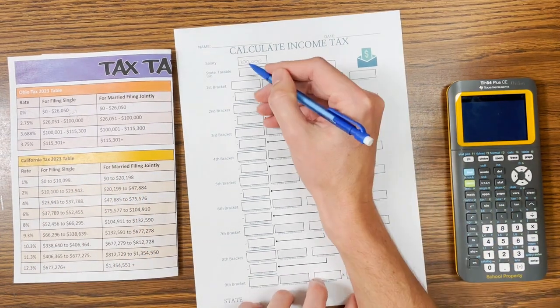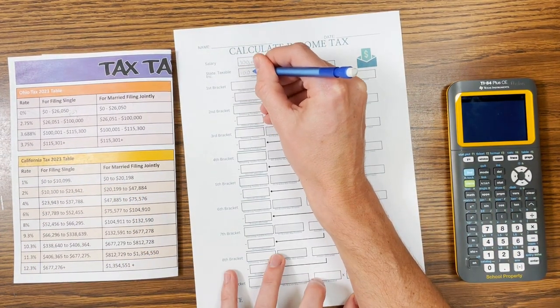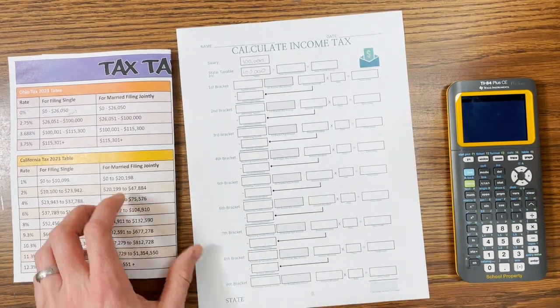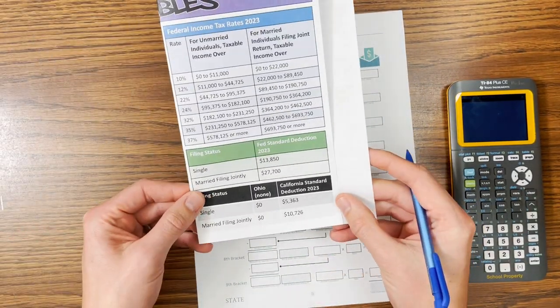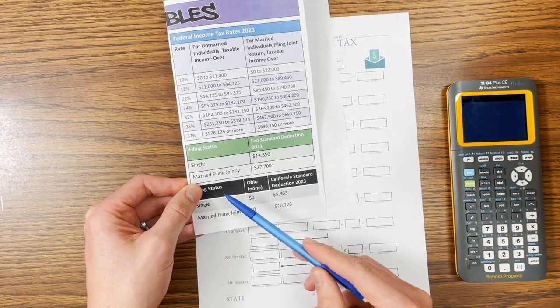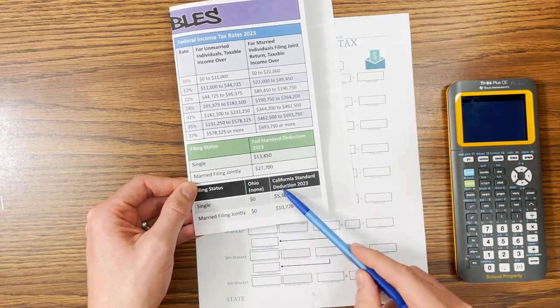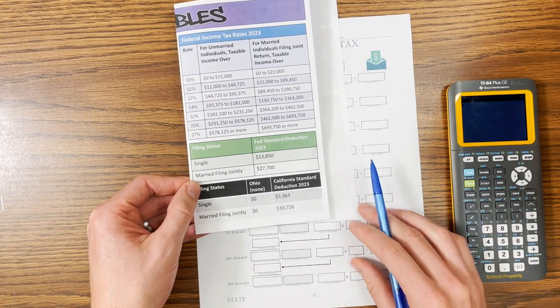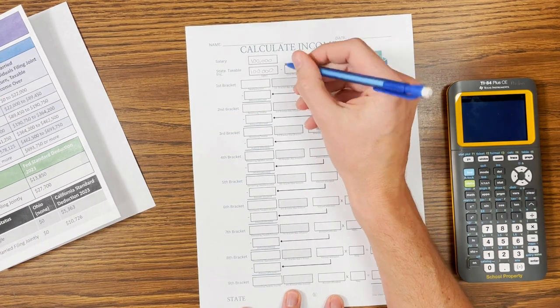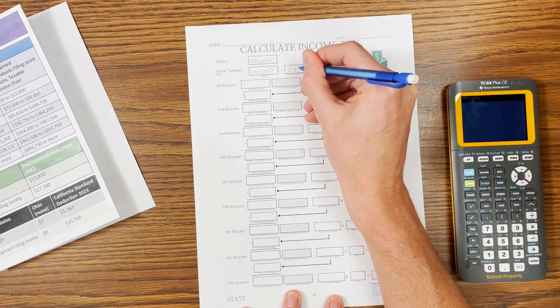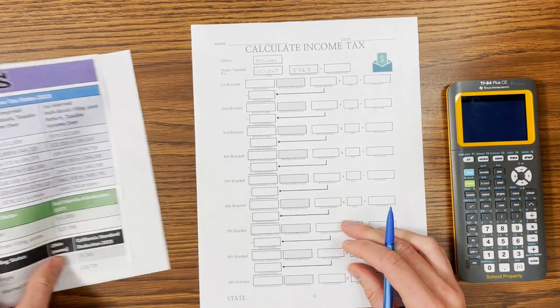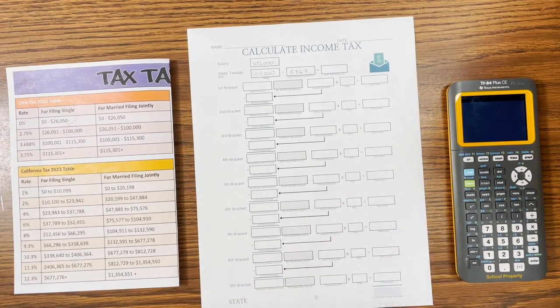Okay. So our $100,000 comes straight down. That is our salary for this. We have a state standard deduction. So we look and see, does California offer a state standard deduction? So California for a single person is $5,363. If you're married, it goes up to double that amount. So I have $5,363 as my California state standard deduction.